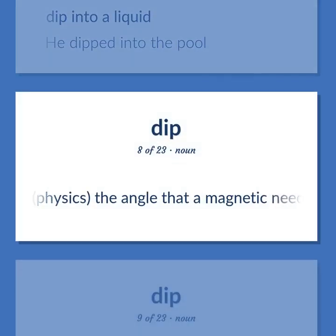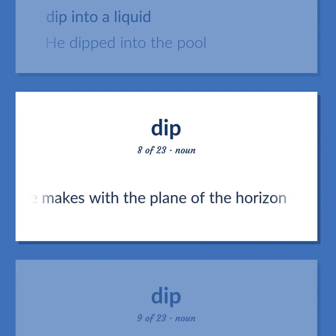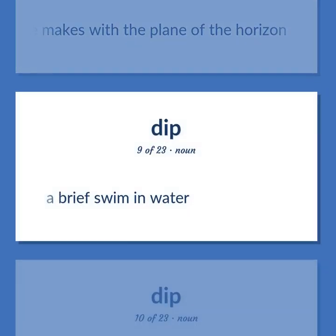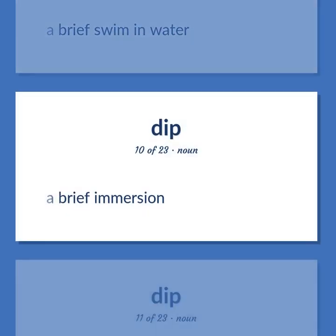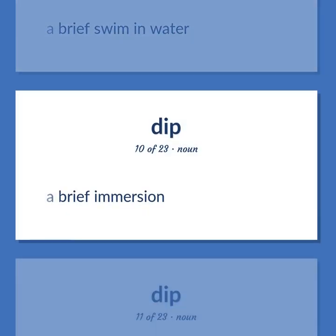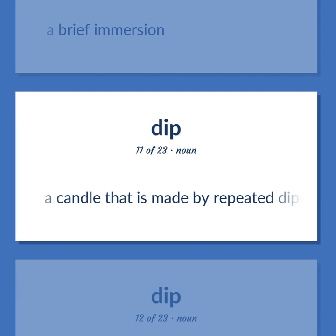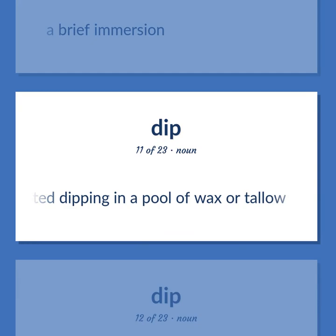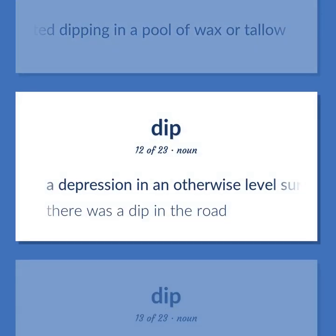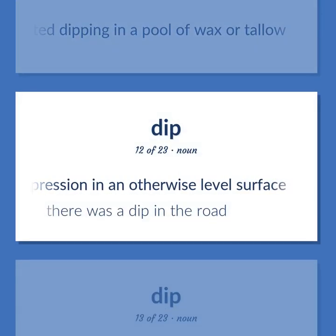Physics: The angle that a magnetic needle makes with the plane of the horizon. A brief swim in water. A brief immersion. A candle that is made by repeated dipping in a pool of wax or tallow. A depression in an otherwise level surface. There was a dip in the road.